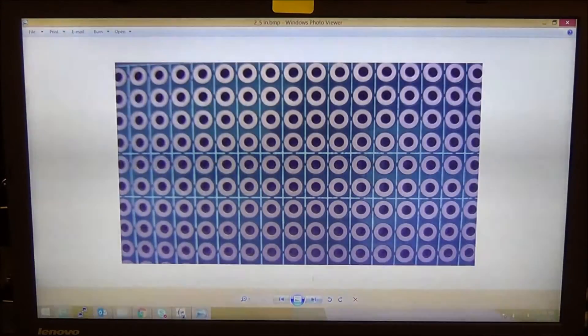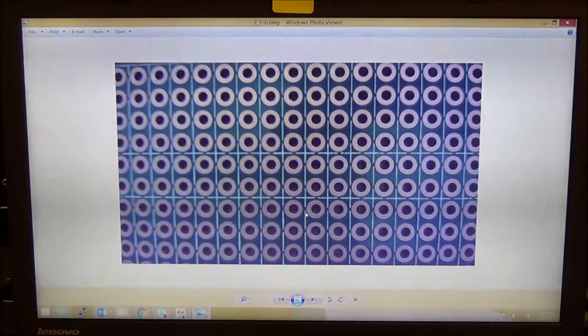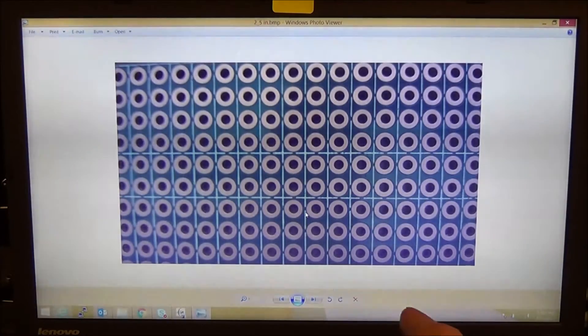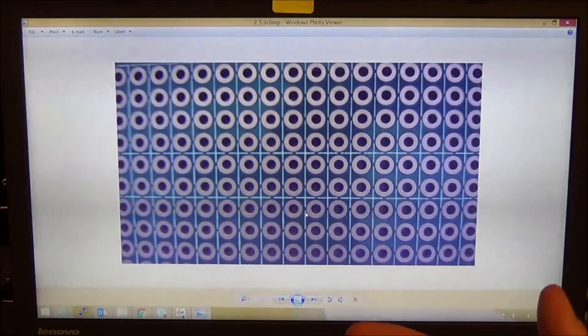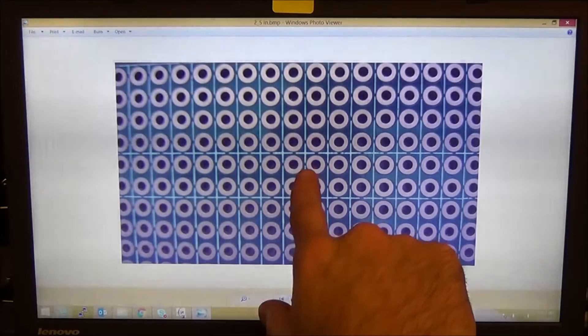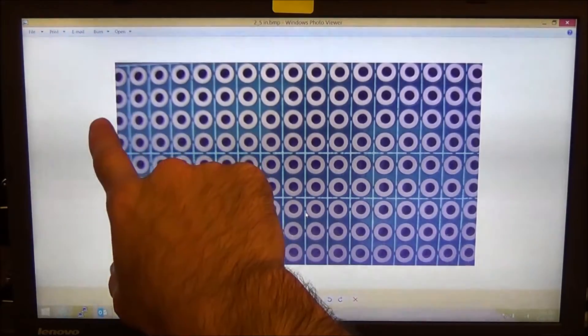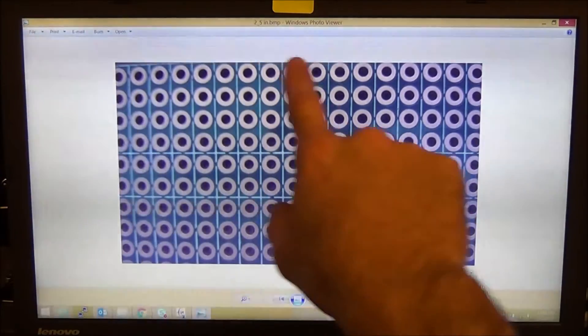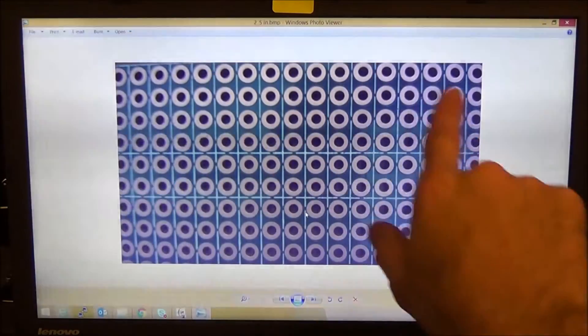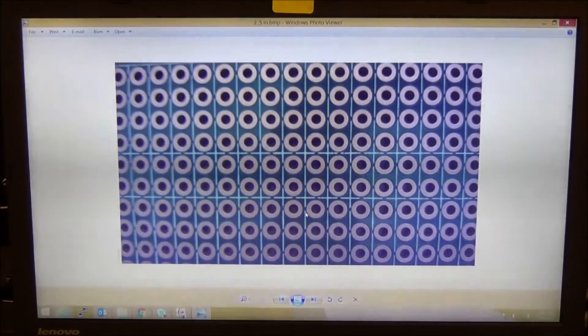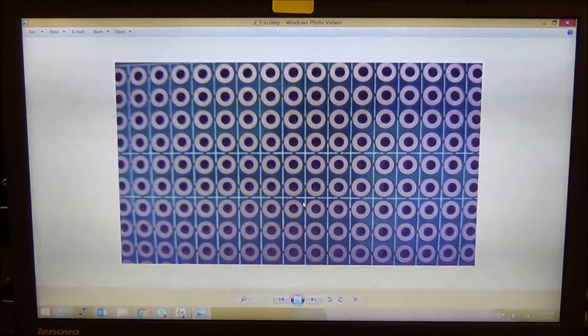So I did it again with 2.5 inches and this was with the focusing optic all the way towards the sensor. So this is pretty much the worst case scenario. Again, focused, less focused, but there's less distortion. What's interesting you notice is that it's the opposite way, right? So depending on where the focusing lens is, you're going to get different distortions.